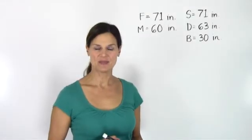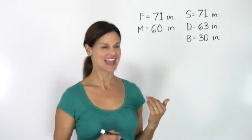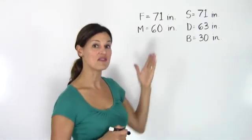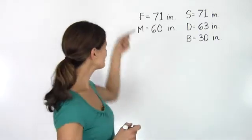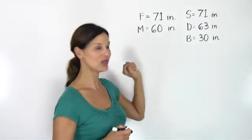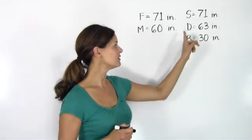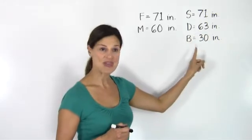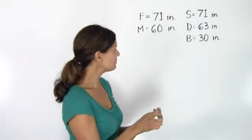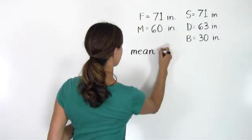We're going to look at an example of a family of five who has measured their heights. We want to find the mean, median, and mode of this family's heights. The father measures 71 inches, the mother 60 inches, the son is the same height as the father at 71 inches, the daughter 63 inches, and the little baby is 30 inches tall.